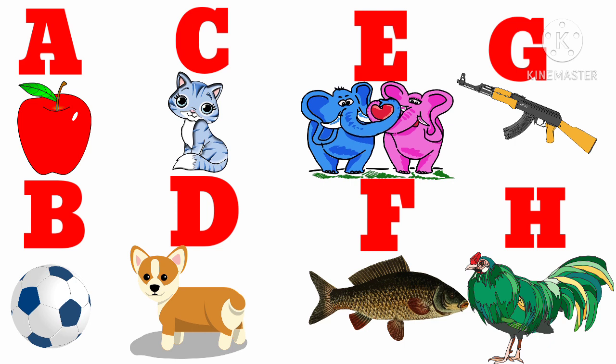E. E for elephant. F. F for fish. G. G for gun. H. H for hen.